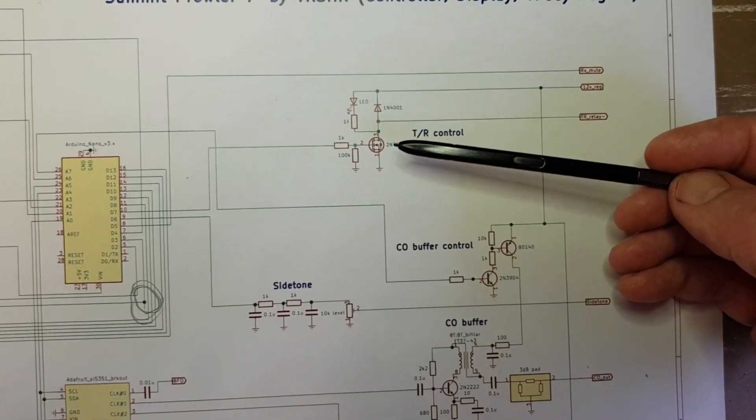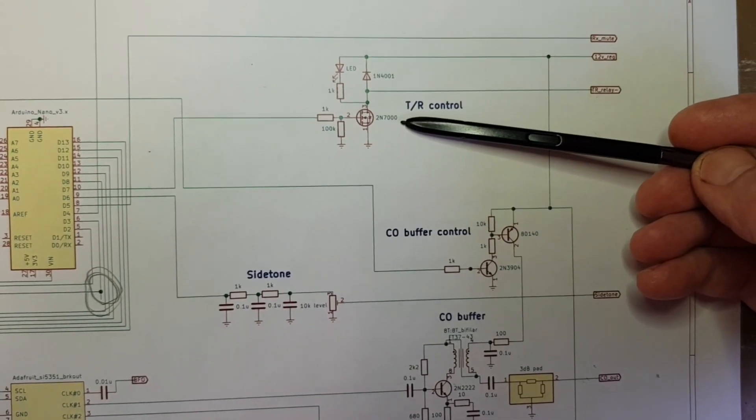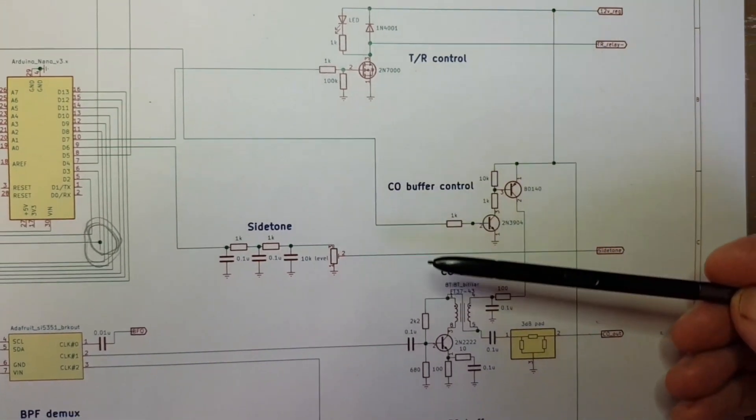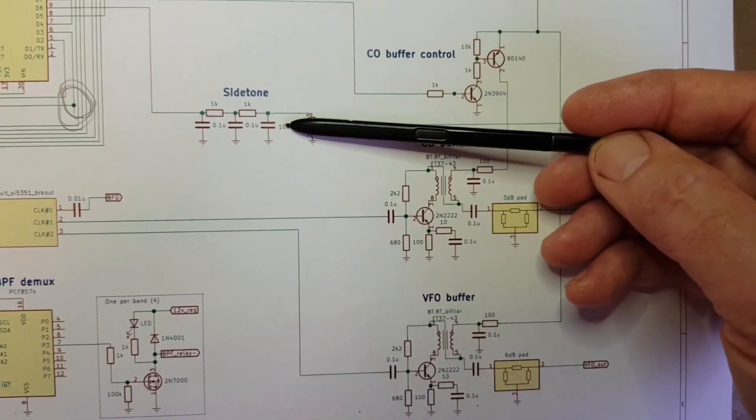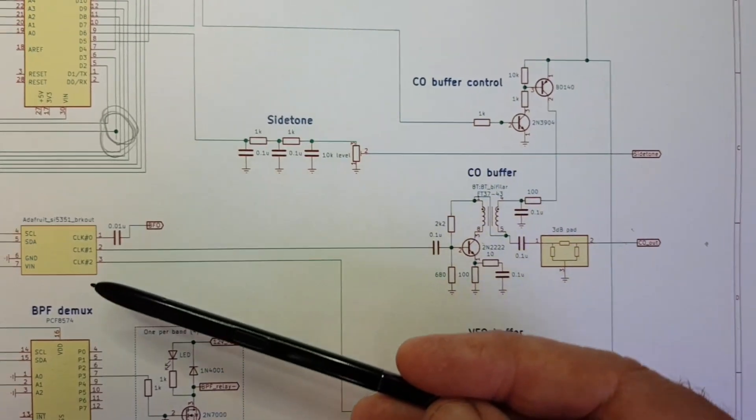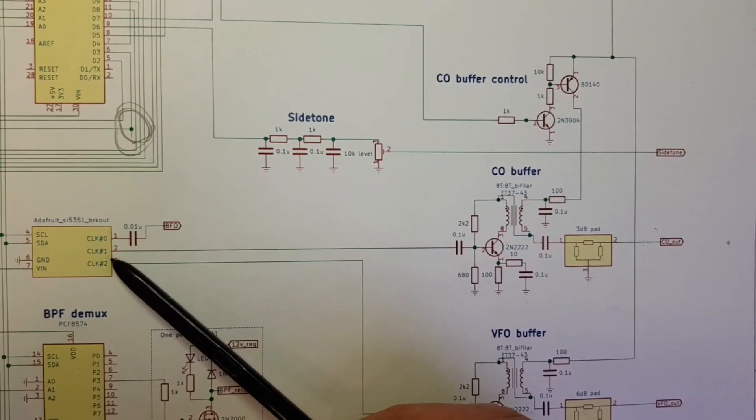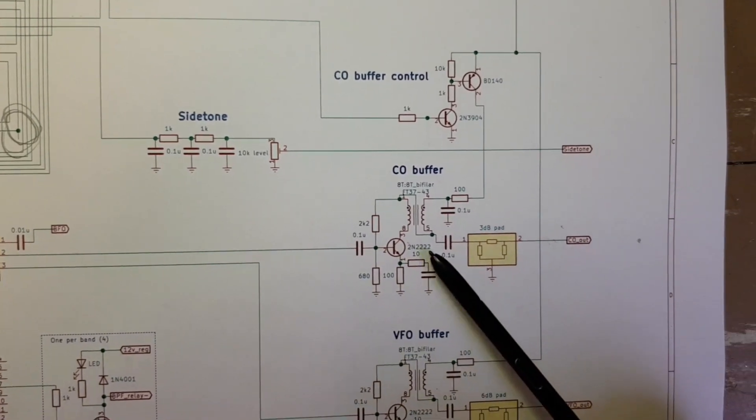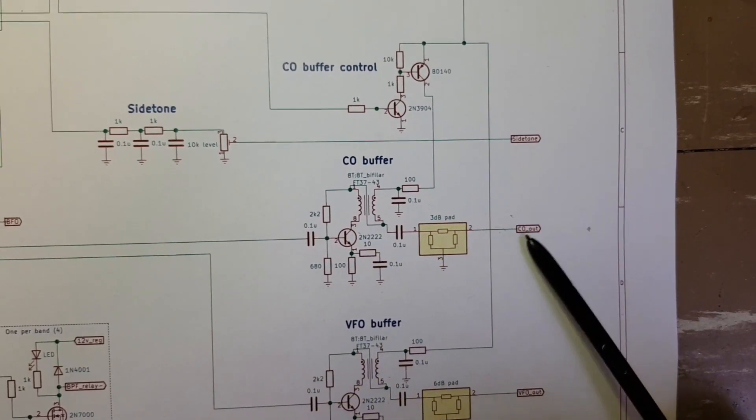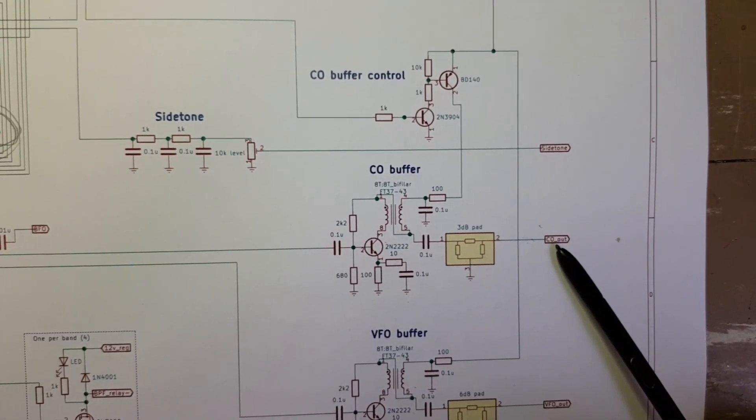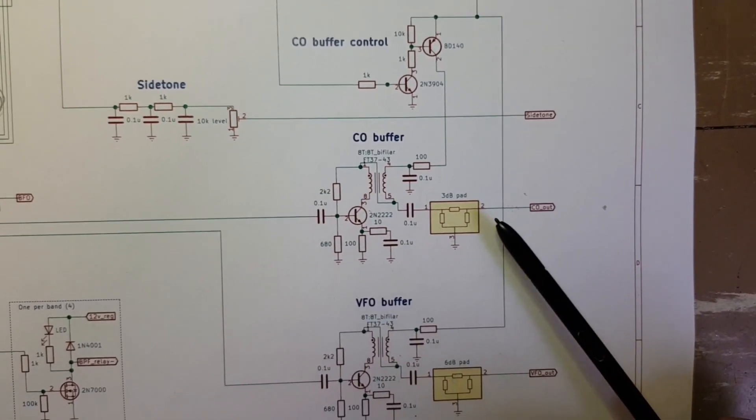Then some DC and other controls. So this is the switching for the TR relay, this is the VFO buffer, side tone filtering. And then for CW, the script generates CW in software and puts it on clock one. And that signal is buffered and then dropped onto the input of the driver for directly generated CW.